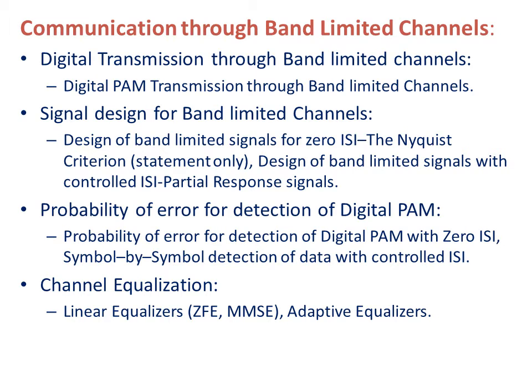Module 4 is communication through band-limited channels. We know that the channel bandwidth available is limited, so how to achieve efficient transmission through this and what techniques are available to achieve efficient transmission in the available bandwidth — that is mainly what this module covers. The first topic is digital transmission through band-limited channels, specifically digital PAM (Pulse Amplitude Modulation) transmission through band-limited channels.